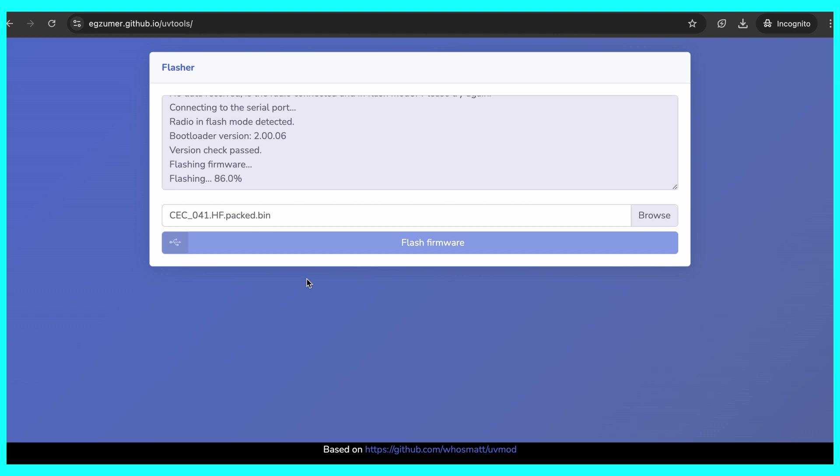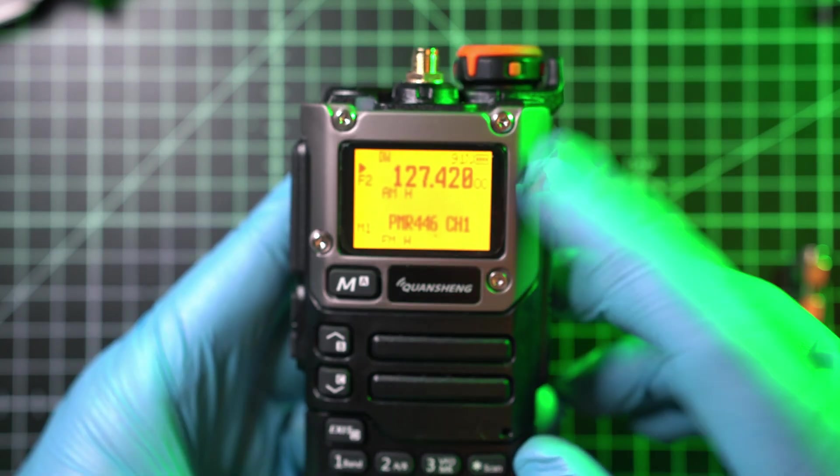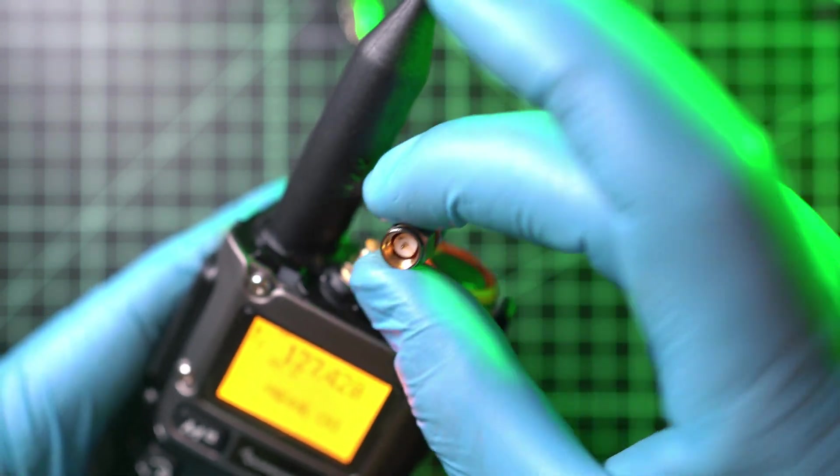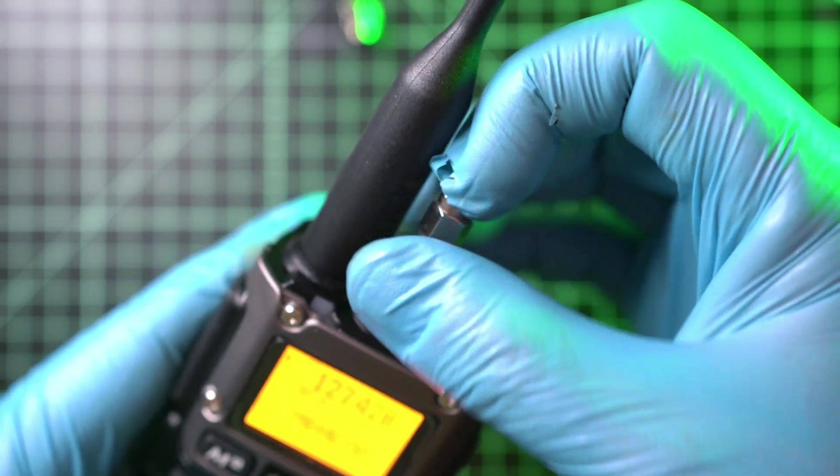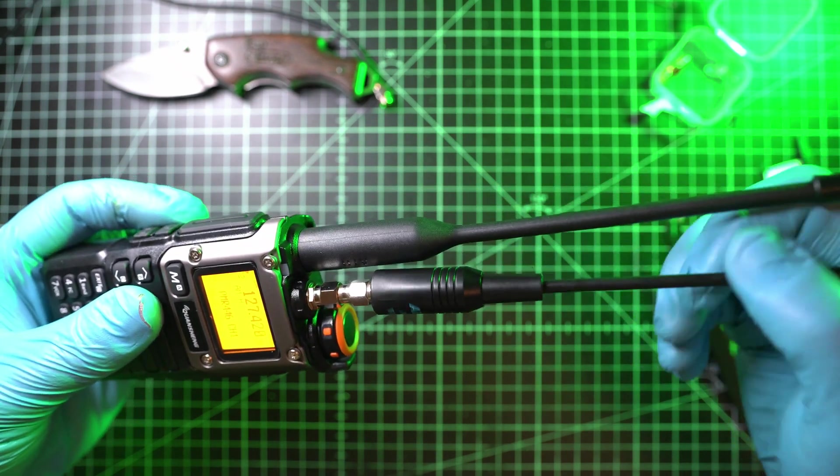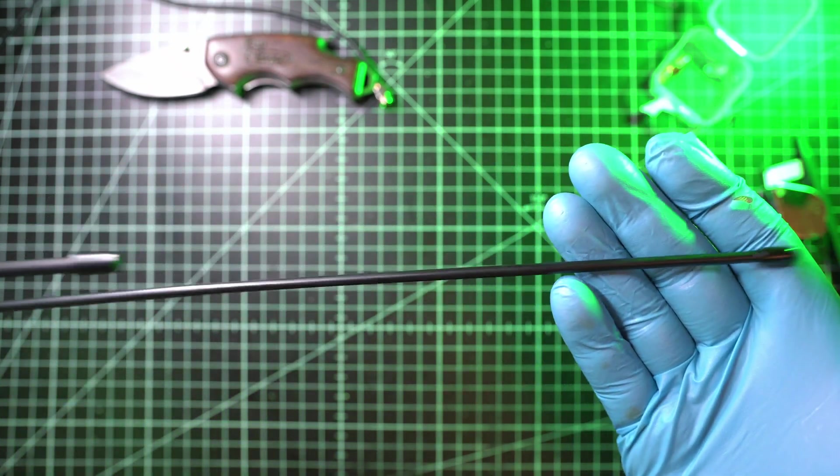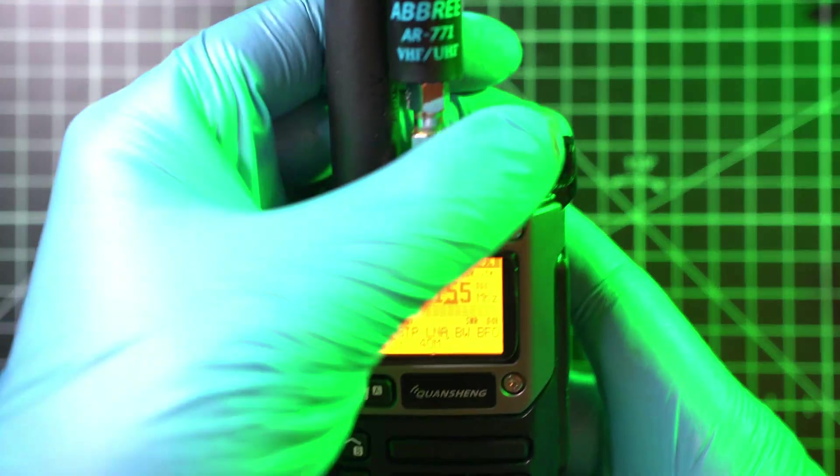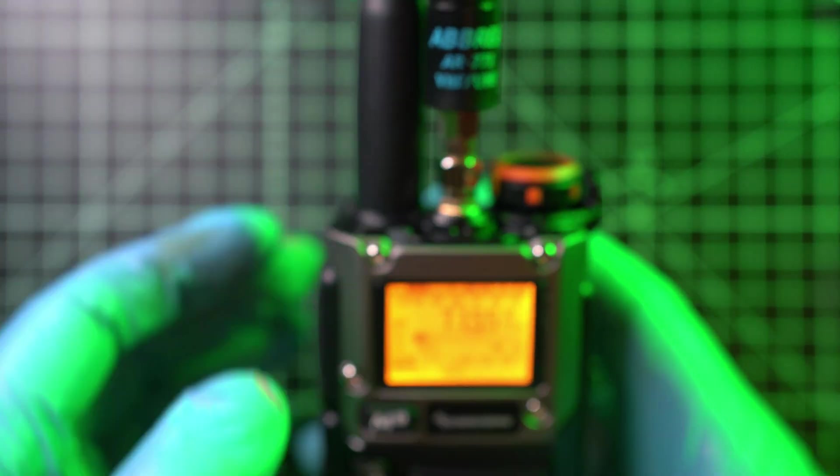Product links are in the description below. Also, all links related to this procedure. Now, let's test it out. I'll attach an SMA joiner and my 771 antenna. And let's enter HF menu. That is quite loud. Not like version 1.